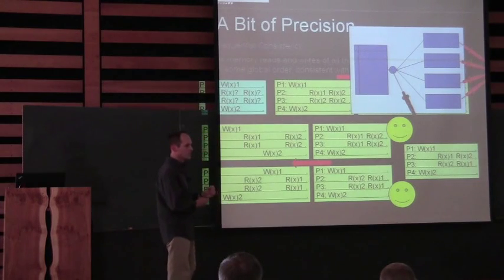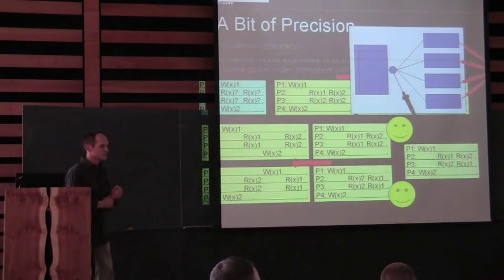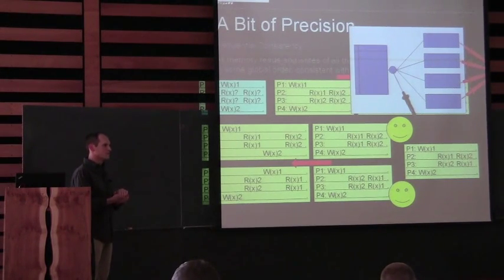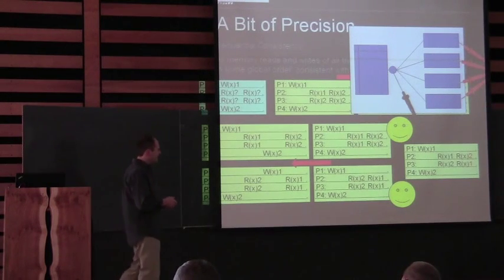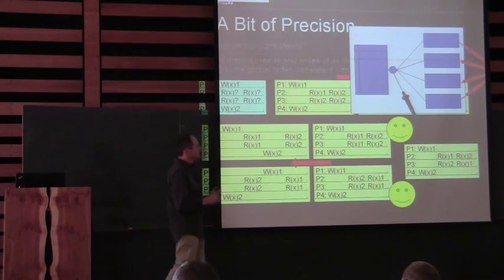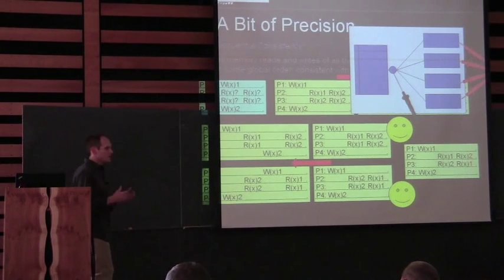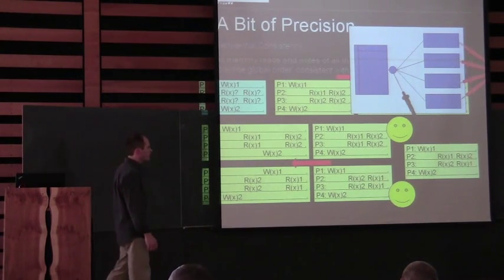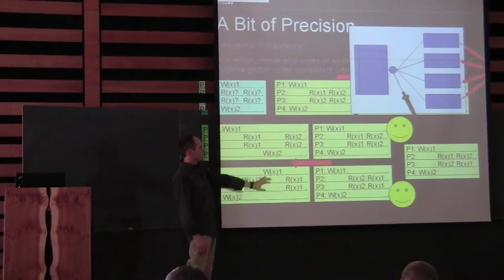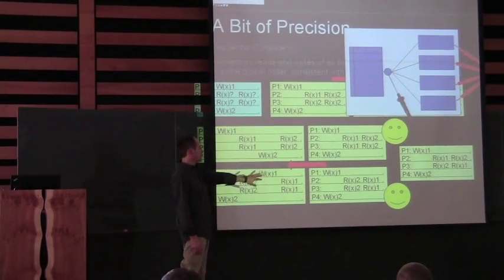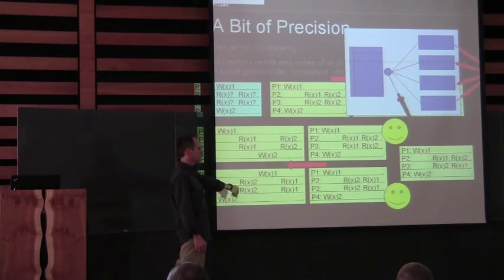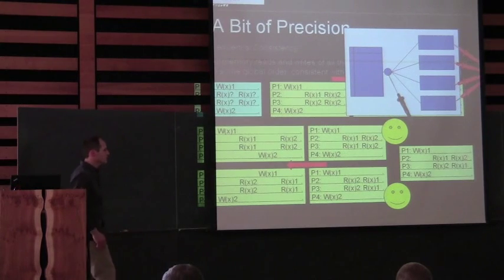Question: Sequential consistency means there is an order, but it doesn't specify which order it is? Yes. It says don't worry about what order it happened in — as long as you can figure out a consistent order that makes sense, assume it happened in that order. That's the as-if part of it.